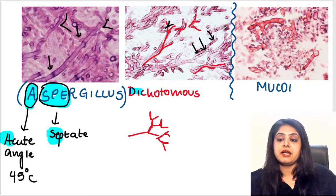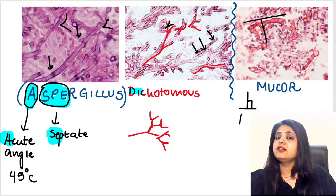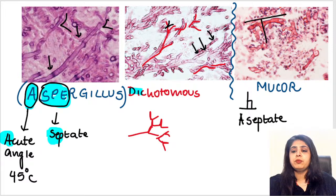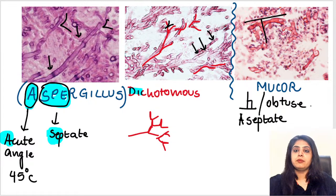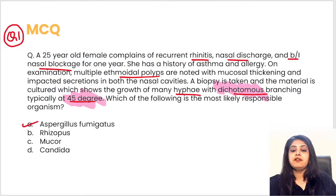Always compare Aspergillus with Mucormycosis because Mucor is the opposite. If Aspergillus was acute angle branching, Mucormycosis is 90-degree branching. It does not have any septa — it is aseptate and totally clean. Also, Mucor is thicker, like a ribbon-shaped structure. That finishes all the differences: Aspergillus is 45-degree acute angle, dichotomous, septate; Mucor is 90-degree, aseptate, ribbon-like.